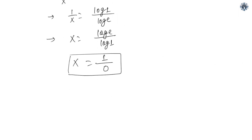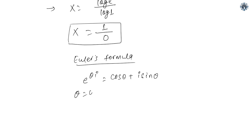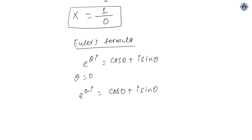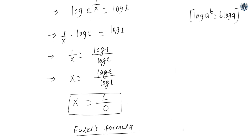Here we are going to use Euler's formula. From Euler's formula we have: e to the power i·theta is equals to cos theta plus i·sin theta. Now put theta equals to 0. The equation becomes e to the power 0 times i equals cos 0 plus i·sin 0, which gives e to the power 0 equals 1 plus i times 0, equals 1. So Euler's formula is satisfied — it gives 1 equals 1.